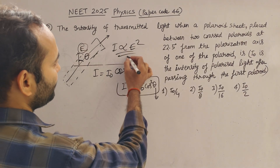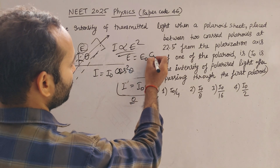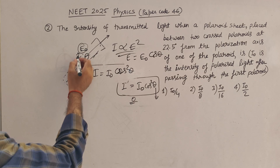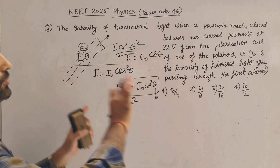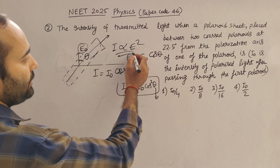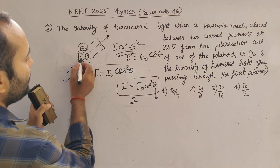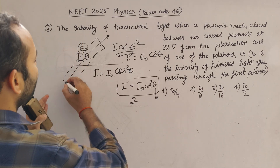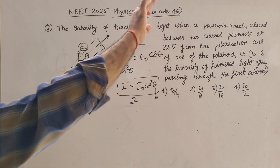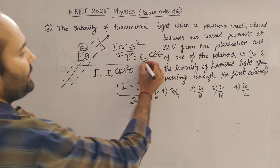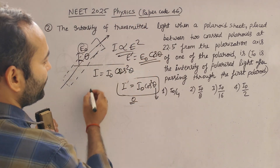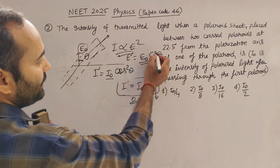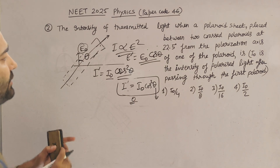If you didn't get it — basically after passing through the polarizer, E prime equals E naught cos theta. Only the component of the field parallel to the polarized axis will get through. Then you square it: E prime squared becomes I prime, E naught squared becomes I naught, and you get cos squared theta. So: I prime = I naught cos squared theta. That is the derivation.